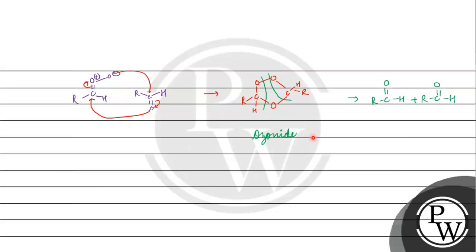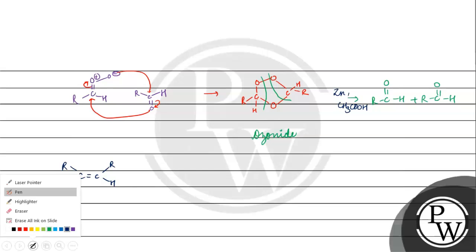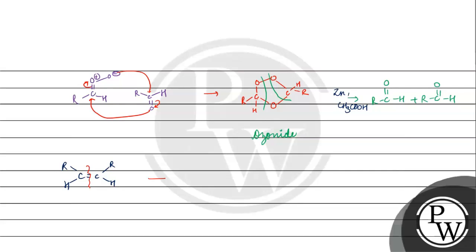Now the ozonide is formed. The carbon-oxygen bond rearranges: one oxygen goes to one carbon and the other carbon adds oxygen. We have an L-3 type intermediate with one oxygen from water, giving us a P-3 ozonide structure. Carbon will go and the other carbon will add oxygen.